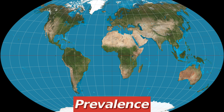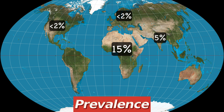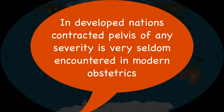The prevalence of contracted pelvis shows considerable geographical variation. The figures reported in the past were 15% in Africa, around 5% in India, and less than 2% in western countries. Severe malnutrition, tuberculosis and rickets were the common causes of contracted pelvis in the past in India and Africa. However, with the improvement in nutritional status and reduction in the incidence of rickets, moderate to severe pelvic contraction is rarely seen these days in India. In developed nations, contracted pelvis is very seldom encountered in modern obstetrics.